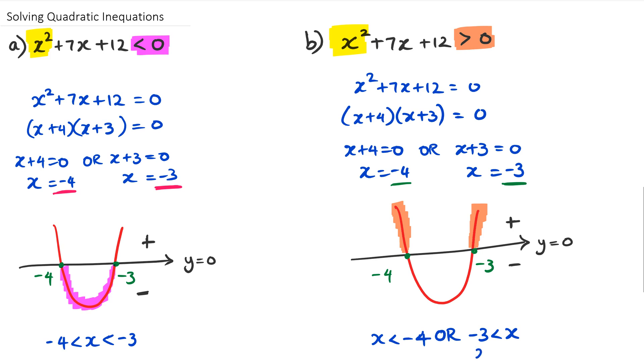So with quadratic inequalities, your final answer is not going to be one where you go x is equal to this and x is equal to that. In fact, you're going to have an interval. Either you'll have one interval like the example I've given in the left-hand side, or you're going to have two intervals like the example I've given you on the right-hand side. So we will look at a couple more questions in part two of this video.